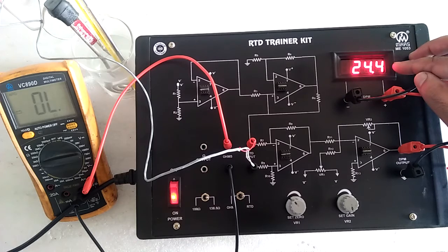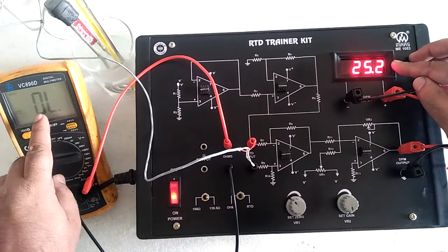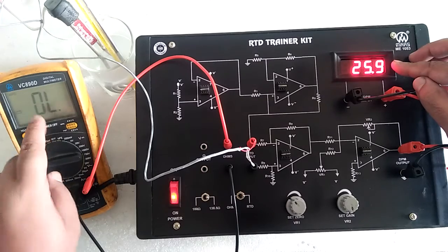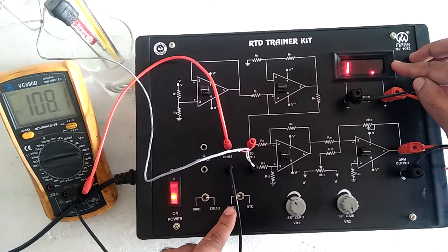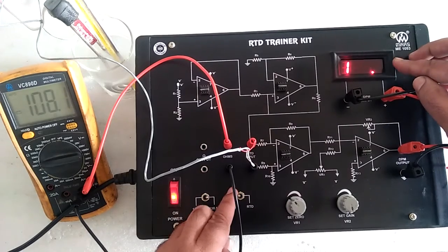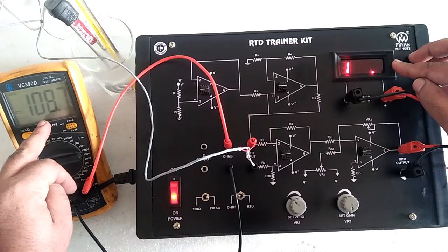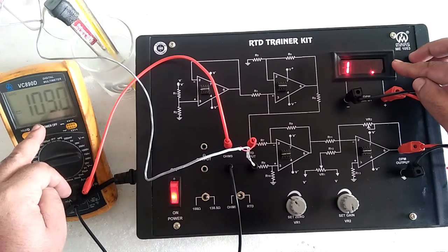Then switch off the immersion rod and take the reading of temperature with this DPM and simultaneously take the value of the resistance using this toggle switch. As we have increased the temperature, the resistance of RTD also increases.